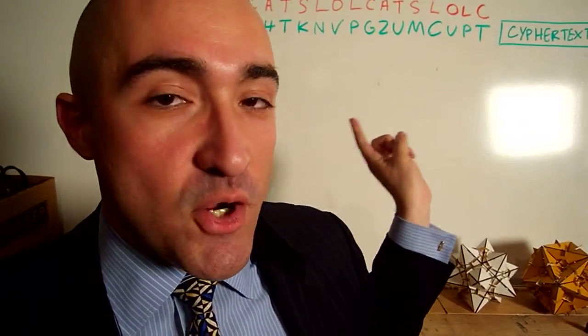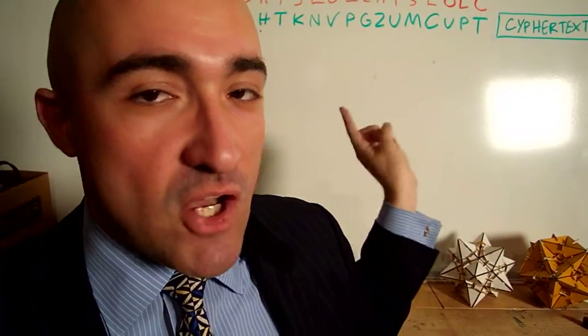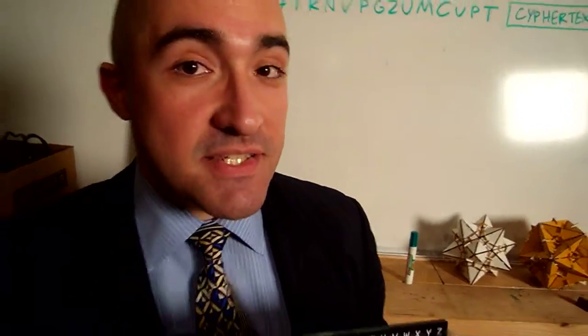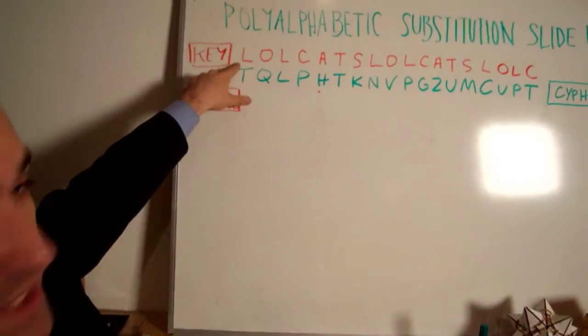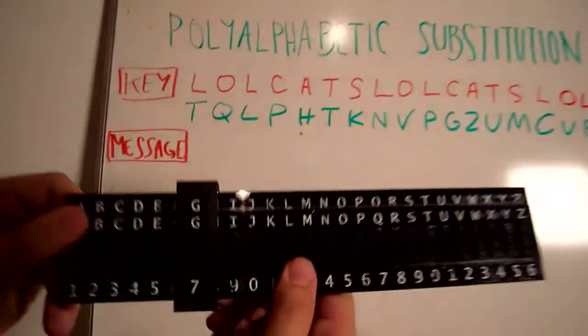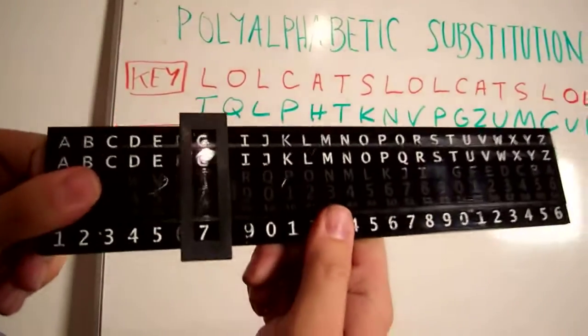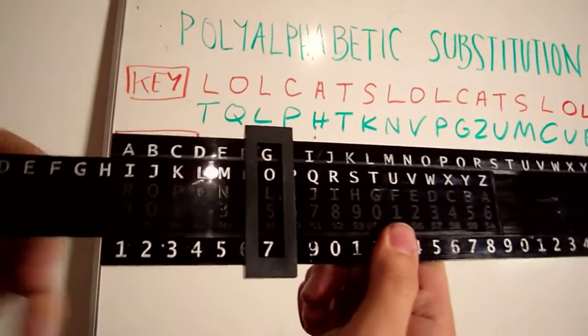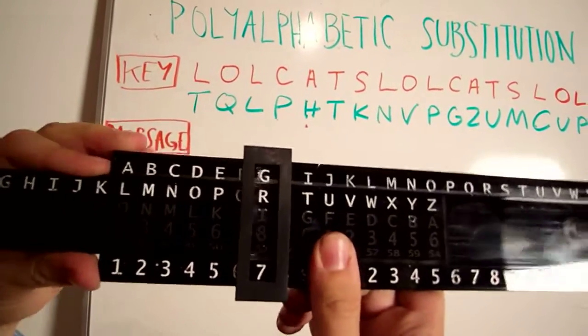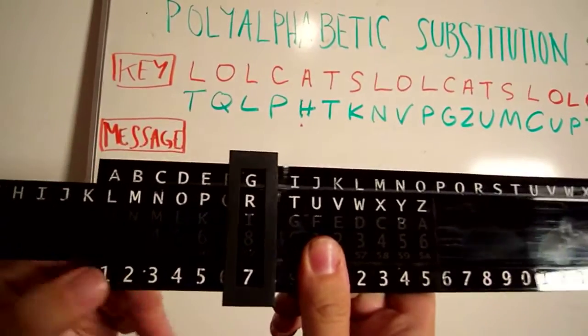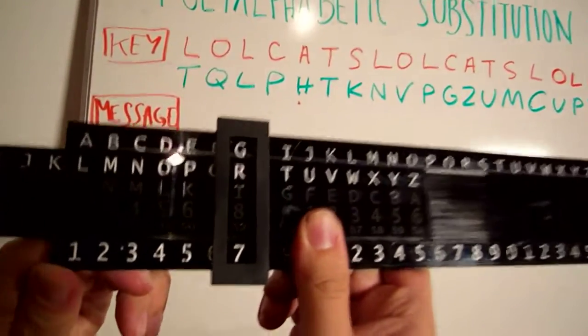We actually have a Caesar cipher up here. Somebody has sent us a coded message with the key 'lolcats' and we're going to use this to go ahead and decipher it. Our key is L, so what we're going to do is shift the slide rule so that L right here is the first letter of the alphabet.